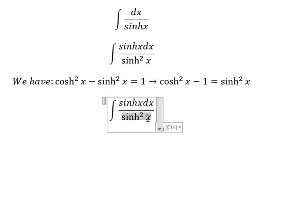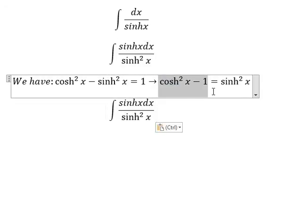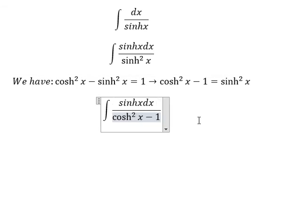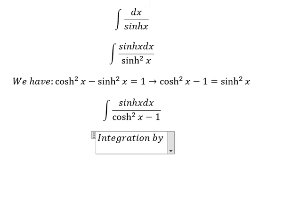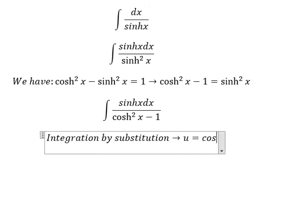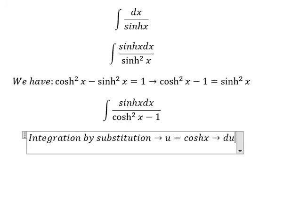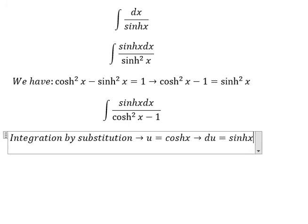So we change this one into this one. Now we can use integration by substitution. So we put u equal to cosh x, du you got sinh x dx.